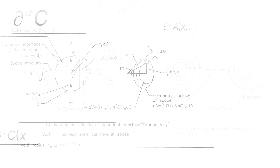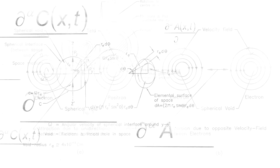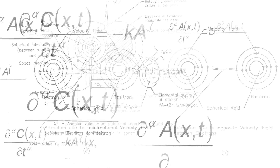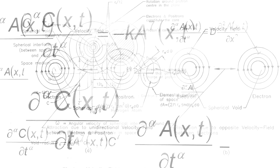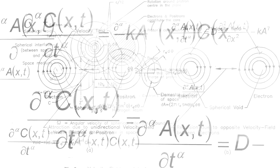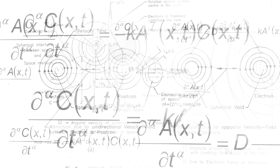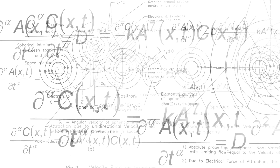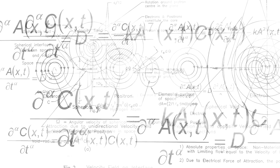ZPE is the smallest amount of energy something can have. Even when a system is in its lowest energy state, it still possesses this residual energy. This is what makes ZPE so intriguing and mysterious.